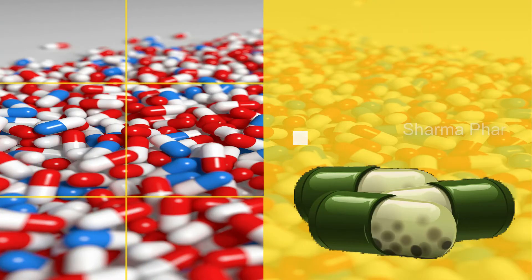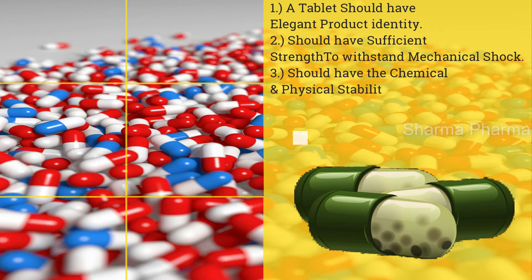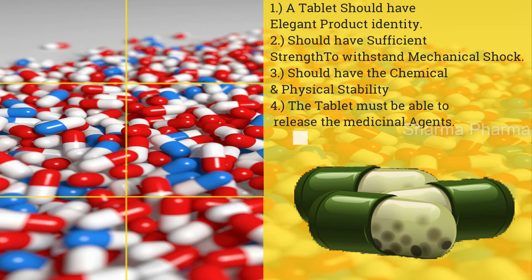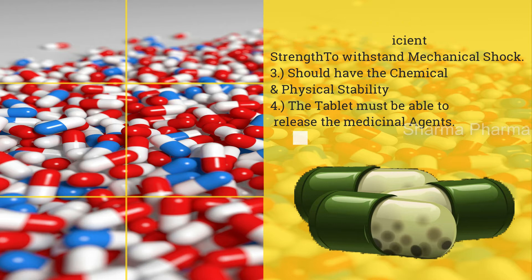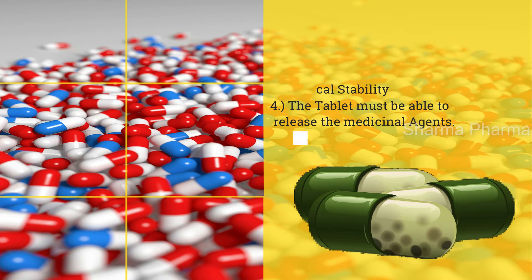A tablet should have adequate product identity while free of defects like chips, cracks, discoloration, or contamination. A tablet should have sufficient strength to withstand mechanical shock during production, packaging, shipping, and dispensing, and should have chemical and physical stability to maintain its physical attributes over time. The tablet must be able to release medicinal agents in a predictable and reproducible manner, with chemical stability so as not to cause alteration of the medicinal agents.